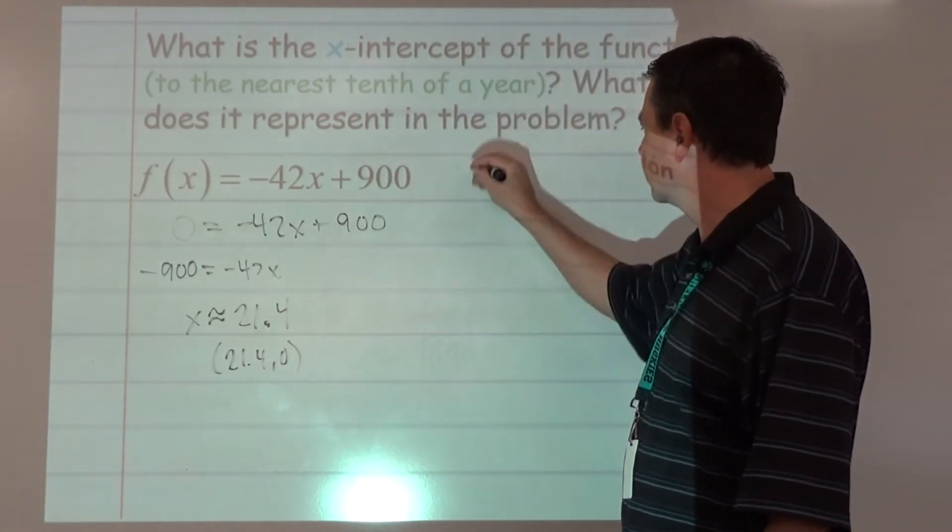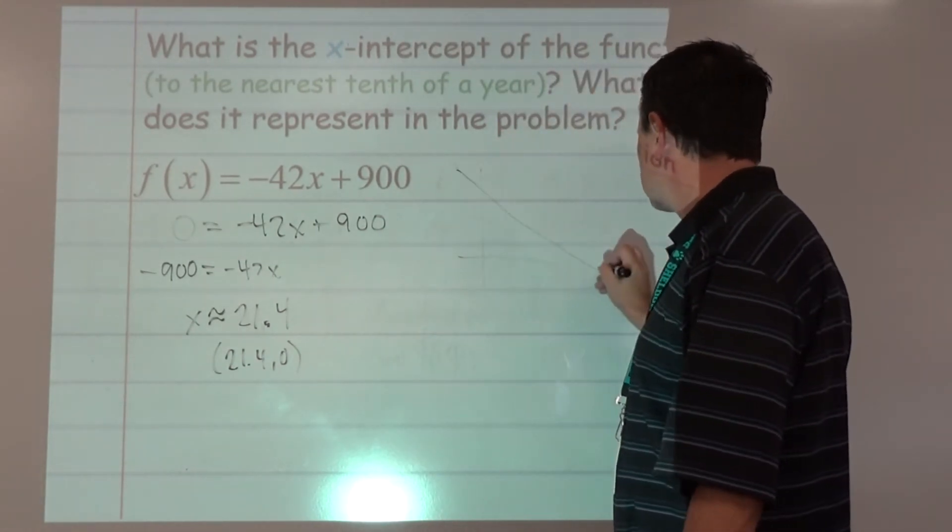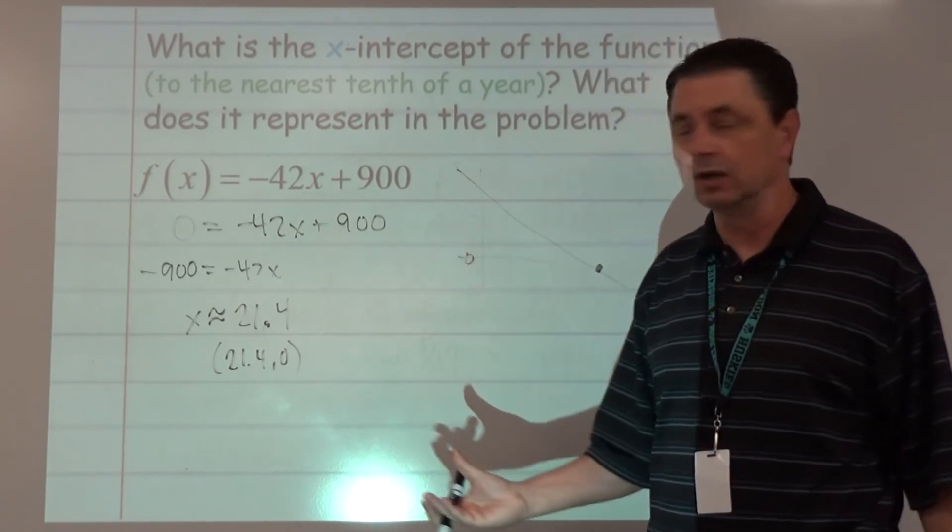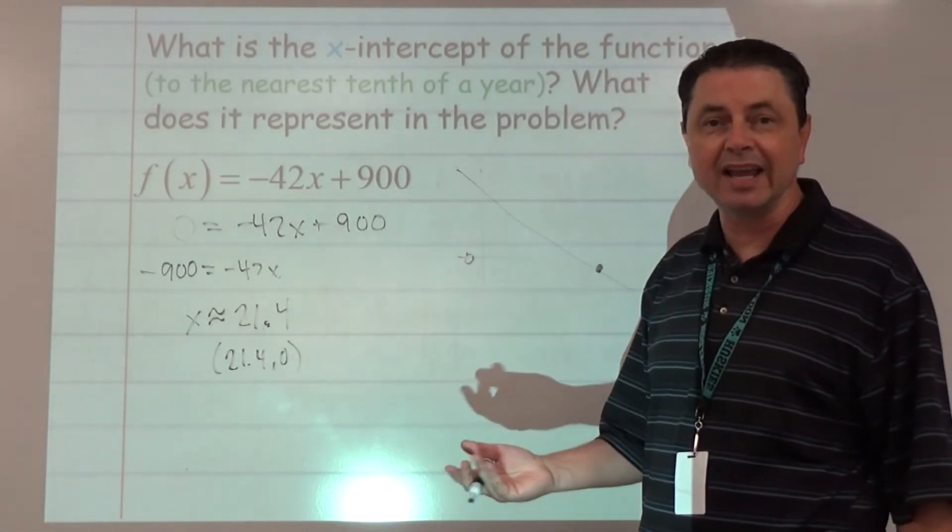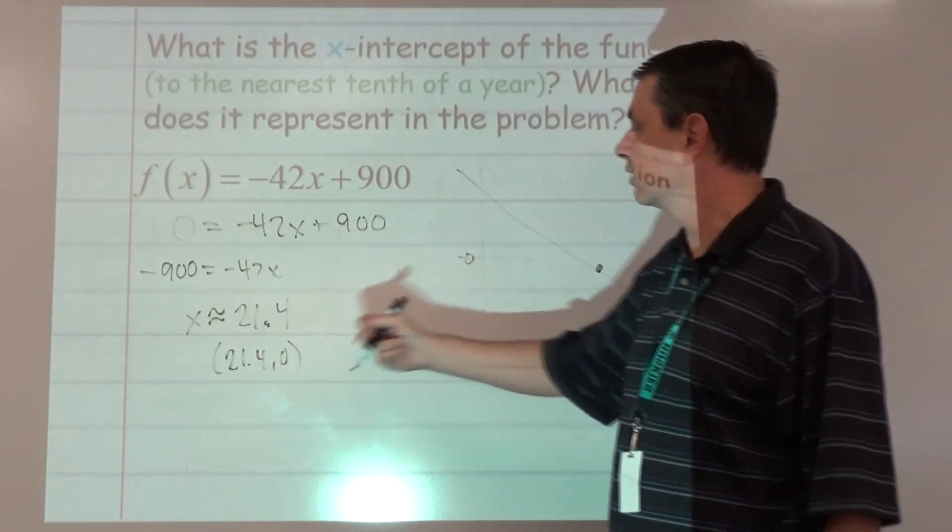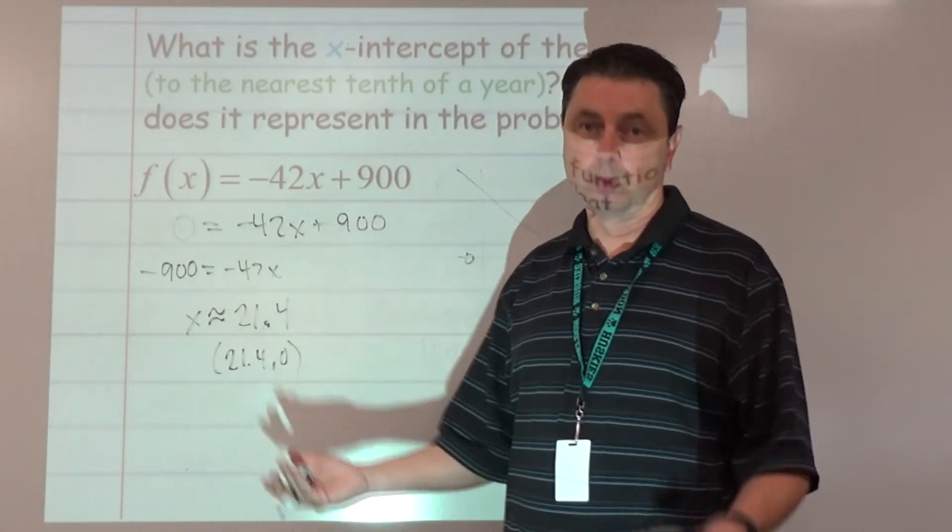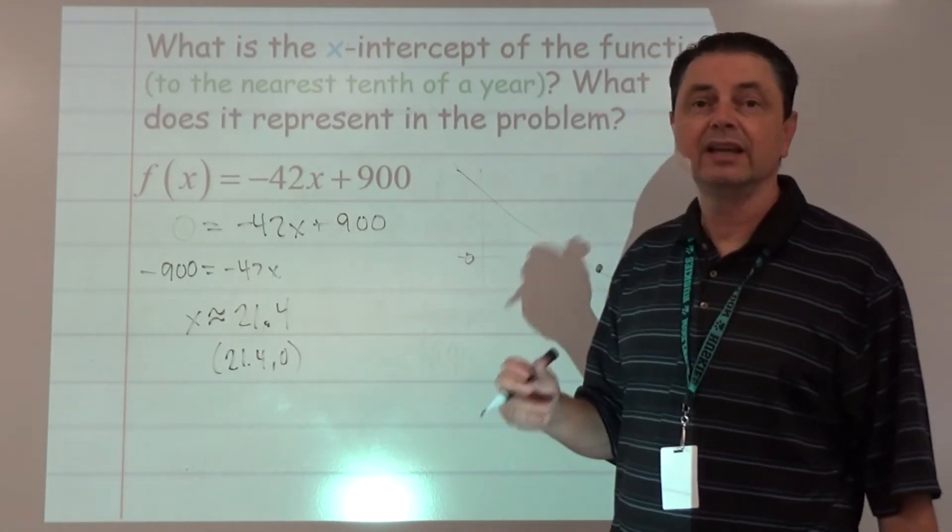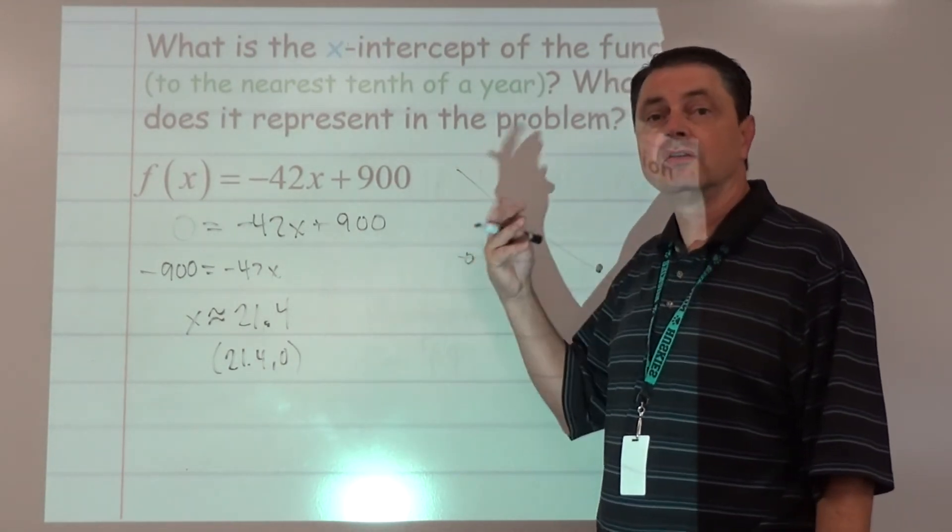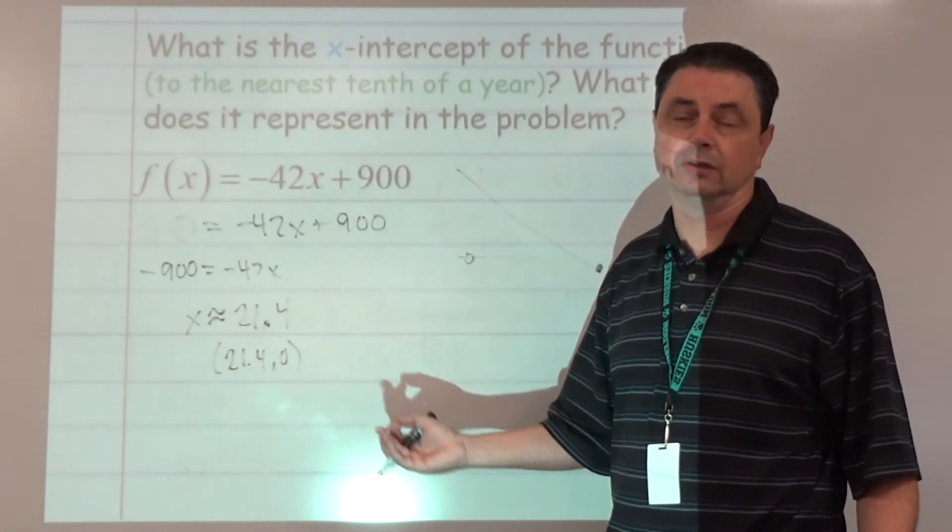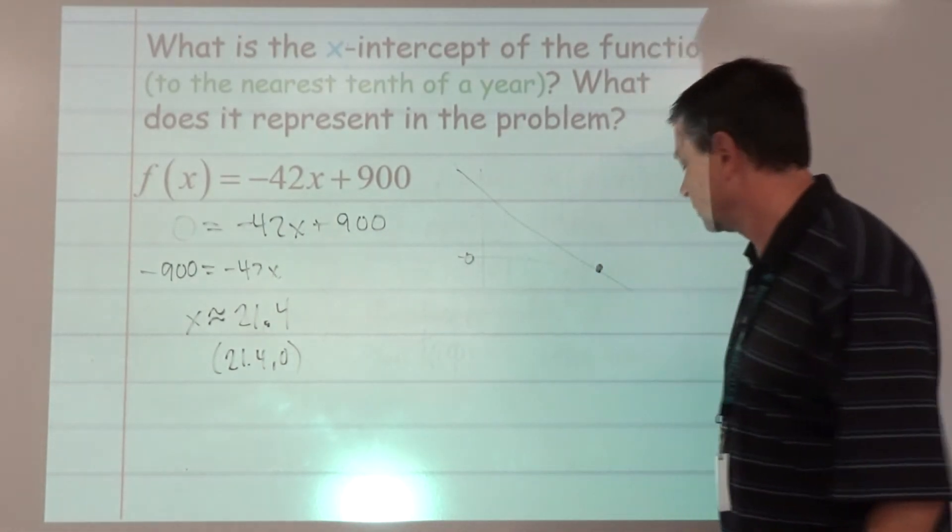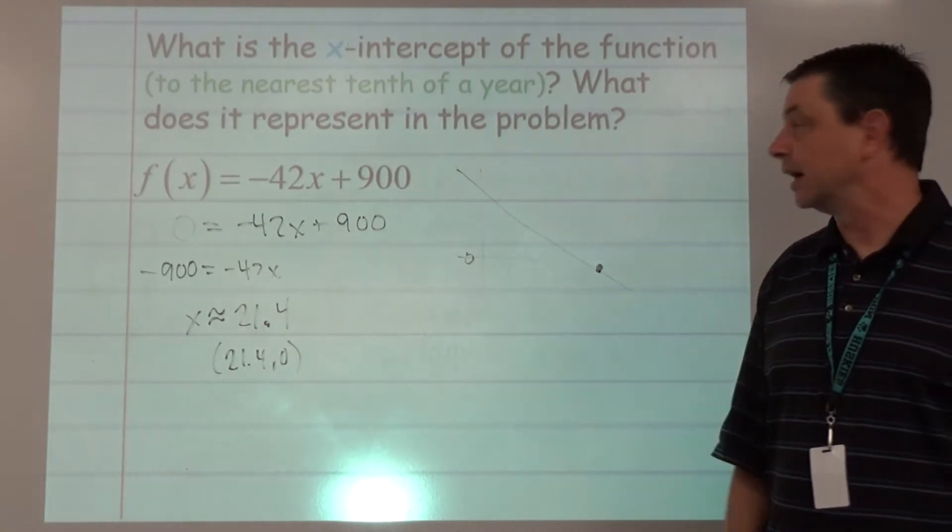What does it represent? If we looked at that graph, it's where we hit out here where the value is zero. It's the time that it takes for the falange to be worthless. So we could write that out: it's the time that it takes for the falange to have zero value.